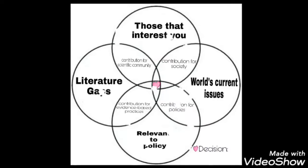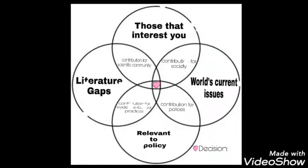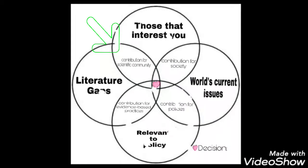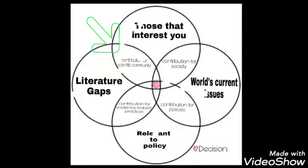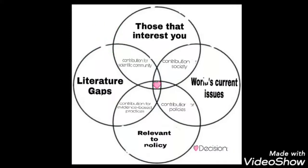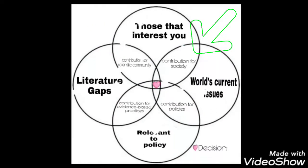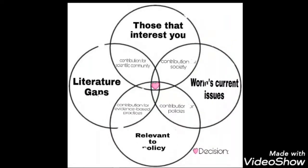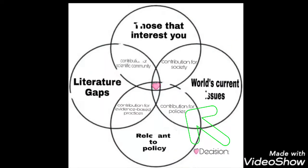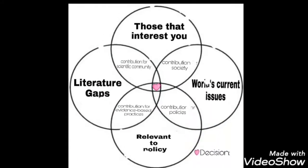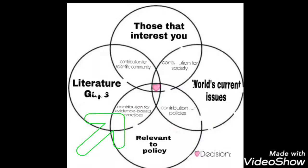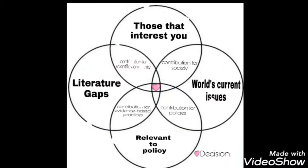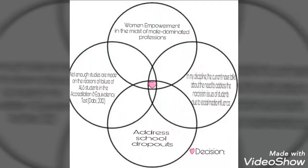If you have already stated your topic or topics in each circle, you have to decide. In order to contribute to the scientific community, for example: Will I choose the topic which addresses the scholarly gap, or will I choose that which I'm really interested to work on? Will I choose that which interests me, or the topic which the world needs? Will I choose the topic that the world needs, or that which can improve policy in my workplace or of the government? Will I choose the topic that addresses a scholarly gap, or that which can be relevant to policy? Those contributions inside the circles are additional criteria to strengthen your final research topic.